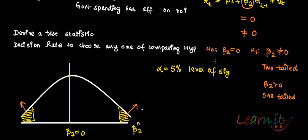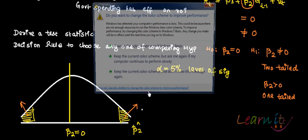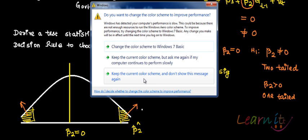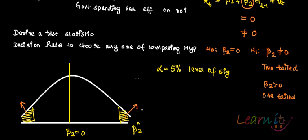You should understand that you must not manipulate your data to get your desired level of significance. For example, if your hypothesis could be safely rejected at seven percent, you should not set your level of significance at ten percent just to achieve rejection. You should refrain from doing that. We'll take this example further and discuss how to test a two-tailed hypothesis.